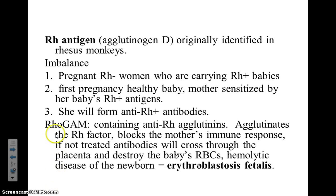Erythroblastosis can be prevented by suppressing the mother's anti-RH antibodies after her first pregnancy.